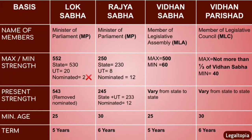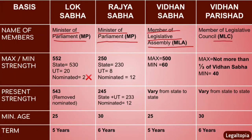Moving ahead to name of members. Members of Lok Sabha are called Members of Parliament (MP). Similarly, members of Rajya Sabha are also called Members of Parliament. Members of Vidhan Sabha are called MLA — Member of Legislative Assembly — since Legislative Assembly is the other name of Vidhan Sabha. Members of Vidhan Parishat are called MLC — Member of Legislative Council — since Legislative Council is the other name of Vidhan Parishat. Don't confuse MLA with MLC.